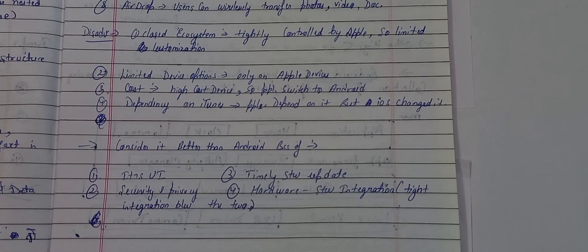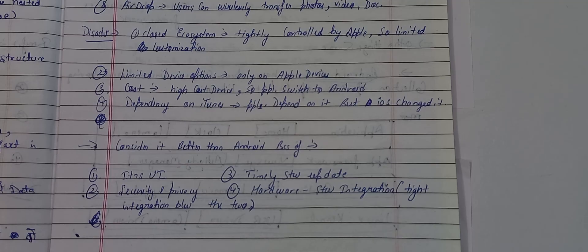The third disadvantage is the high cost. Not many people can easily switch from Android to iOS because Apple devices have high costs, and software purchased from iOS is also very costly compared to Android, which is much lower in cost range. The fourth disadvantage is dependency on iTunes, though Apple has changed this in recent iOS versions, which made it less favorable among some users who didn't want that change.